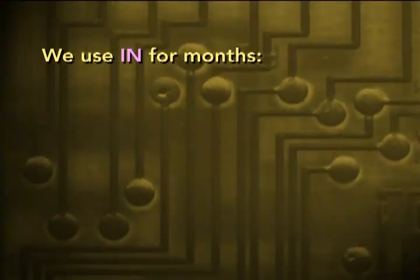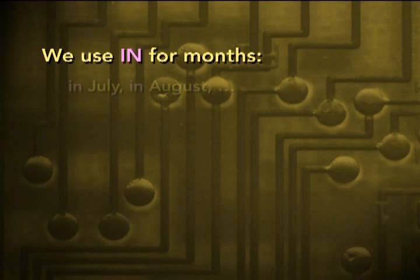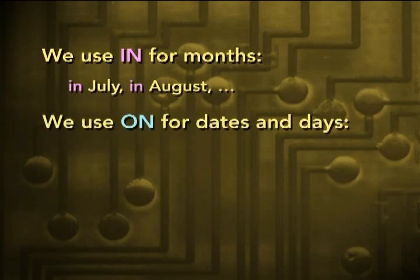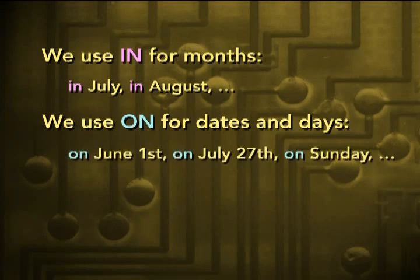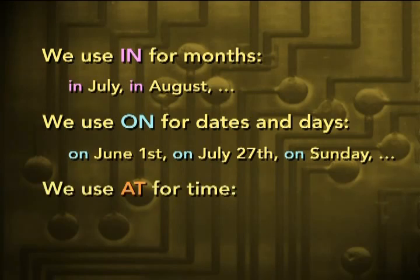Look at the possibilities in this graphic. We use 'in' for months, as in July, in August, etc. We use 'on' for dates and days: on June 1st, on July 27th, on Sunday. And we use 'at' for time: at 6 o'clock, at 3:30.